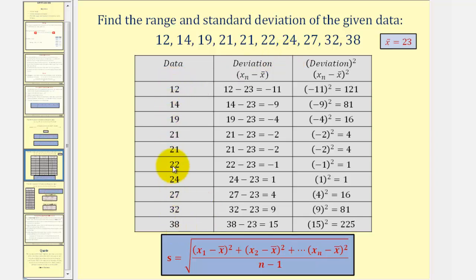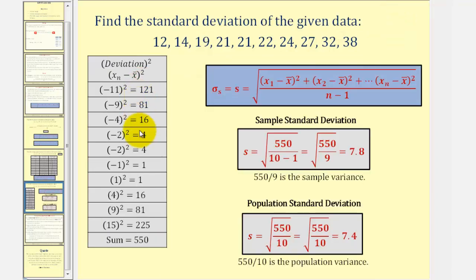The first column lists the data values. The second column takes each data value and subtracts the mean — x sub n minus x-bar. So 12 minus 23, 14 minus 23, and so on. This is the step where we find the difference of each data value and the mean. Next, we square these values, shown in the third column. Then we sum all of those squared values, which gives us the numerator under the square root. The sum of the squared deviations equals 550.